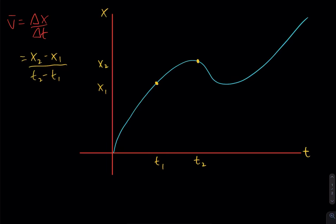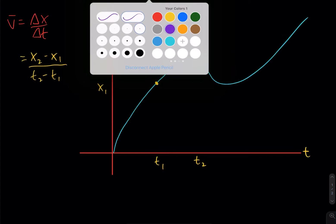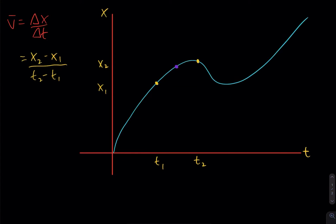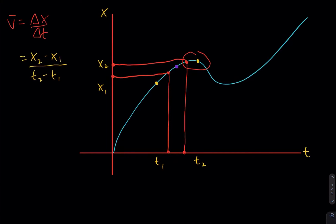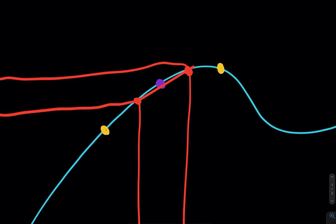What if I asked about the instantaneous velocity right at this point? I'm not interested in my average over some time interval — I want to know my exact velocity right at that point. Well, we can use the average velocity to estimate it. We could take a smaller time interval, and that would give us some new time points and some different position points than we had for the first estimate. Drawing the line through these two points gets us really close to the instantaneous rate of change, but it's not exact — it's a little bit off.